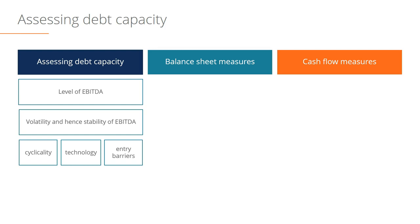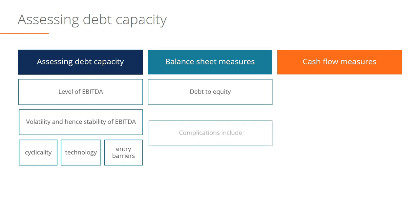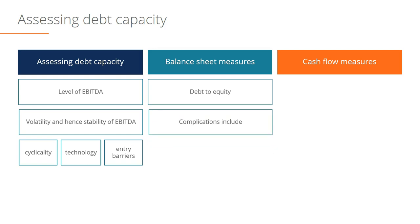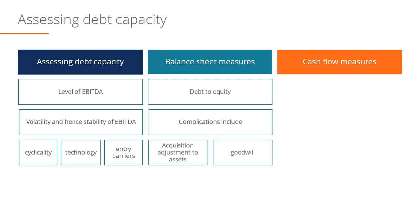Let's take a look at the balance sheet measures that can help us assess the amount of debt a business can handle. The first ratio we will look at is debt to equity, which gives us a high-level capital structure overview. Taking the book value of debt to equity can have a few complications, as things like acquisitions, goodwill, and impairments can all influence the book value of equity compared to the market value of equity.